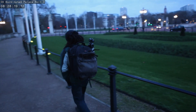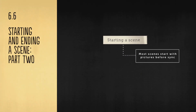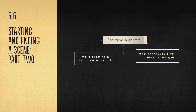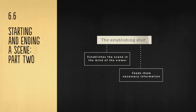We've looked through some of the more preliminary concepts around beginnings and endings. Let's take a more detailed look now at how we start our scenes. Most scenes start with some form of pictures before the sync comes in — we're creating an environment, a visual springboard for our audience. The most well-used industry term for a shot that sets up a scene is called the establishing shot.